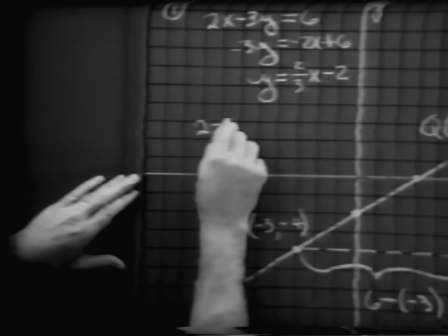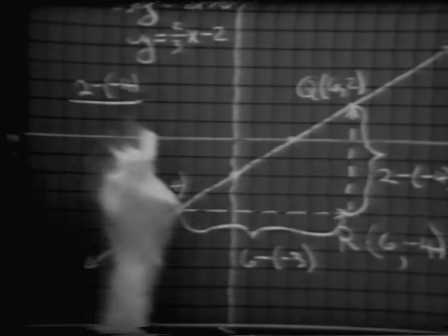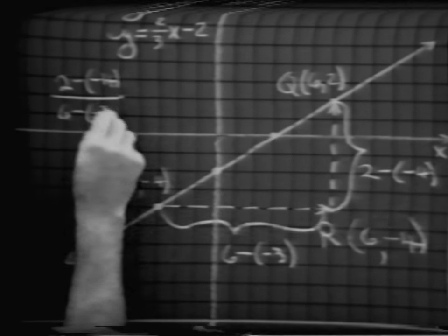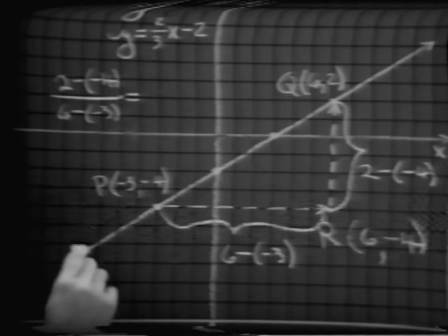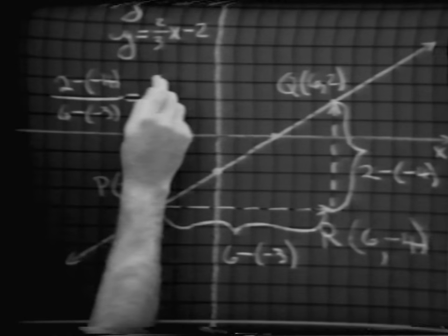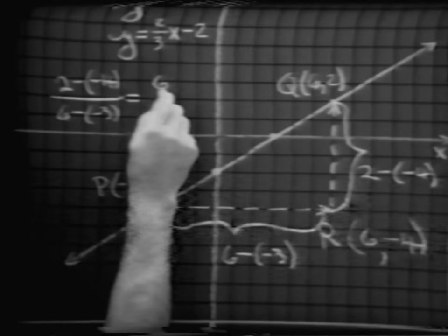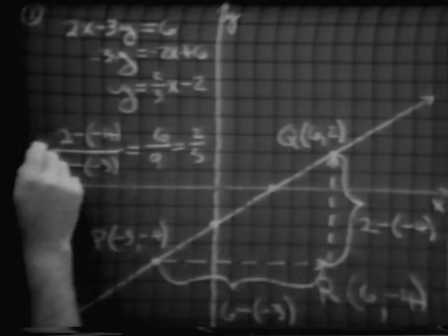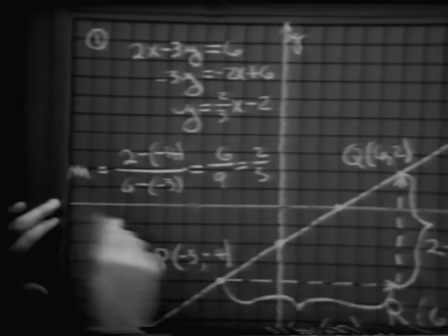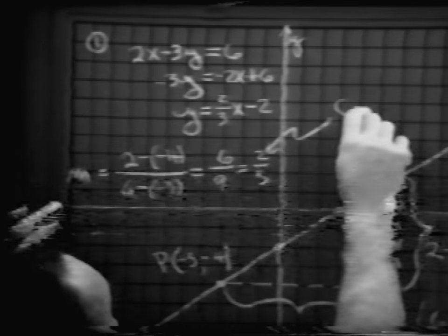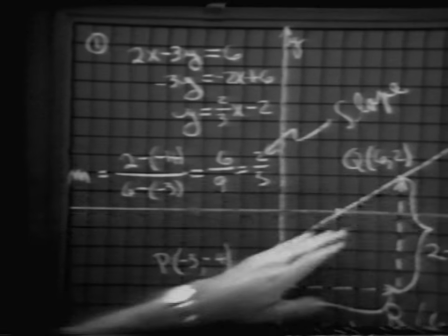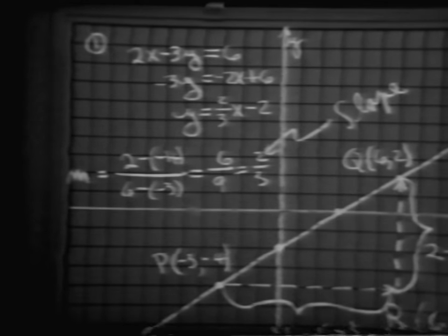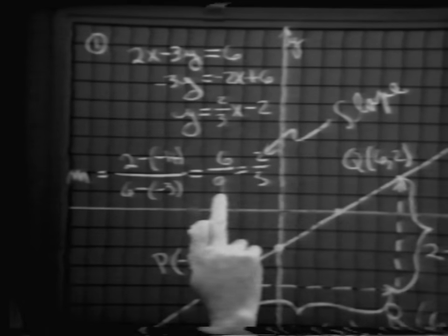We have 2 minus negative 4 as the change of the y coordinates divided by the change of the x coordinates of 6 minus negative 3. This is a name for 6 over 9, and of course this is then equal to 2 thirds. Let's call this number m. Notice right here we have what we call our slope number associated with this line. Notice also in our y pattern, we see a number of 2 thirds times x.